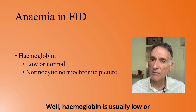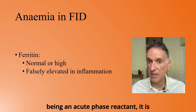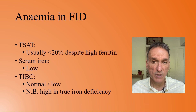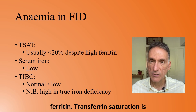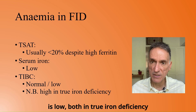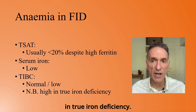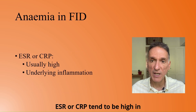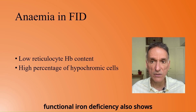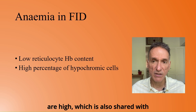What is the typical picture of anemia in functional iron deficiency? Hemoglobin is usually low or normal, often showing a normocytic normochromic picture. Ferritin will be normal or high because being an acute phase reactant it is falsely elevated in inflammation. Transferrin saturation is usually low, below 20%, despite the high ferritin, because iron is unavailable. Serum iron is low, both in true iron deficiency and functional iron deficiency. However, total iron binding capacity is normal or low, whereas it would be high in true iron deficiency. ESR or CRP tend to be high in functional iron deficiency, reflecting underlying inflammation. Finally, functional iron deficiency also shows that reticulocyte hemoglobin content is low, and percentage of hypochromic cells are high, which is also shared with true iron deficiency.